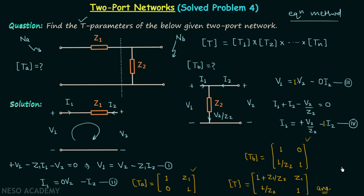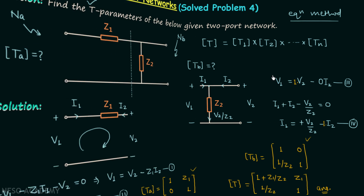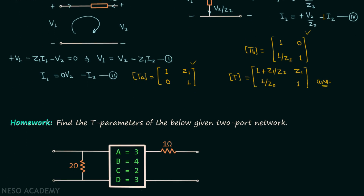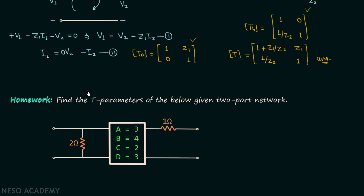Now I hope you understand how you can break a 2-port network into smaller 2-port networks connected in cascade and calculate the T parameter matrix of the entire network. This method is very useful. Now we will move on to the homework problem of this lecture, where you are required to find out the T parameters of the given 2-port network.